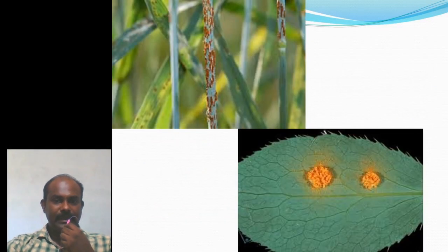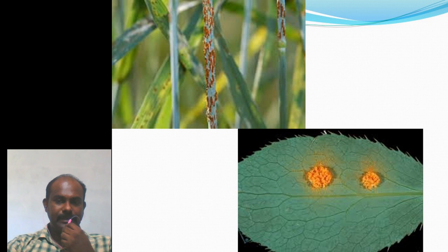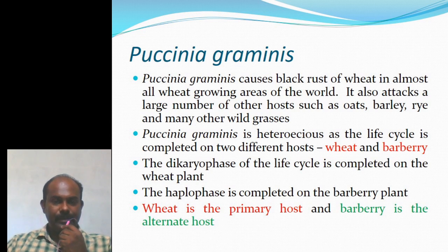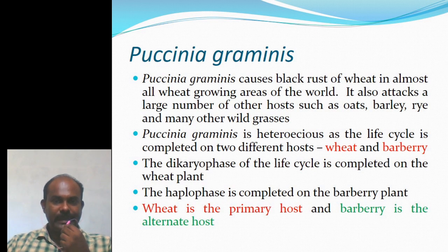These are the appearances of Puccinia — this is the stage on the Barberry leaf and this is the stage on Wheat. We are going to discuss about Puccinia graminis today. Puccinia graminis causes black rust of wheat in almost all wheat-growing areas of the world, and also attacks a large number of other hosts such as oats, barley, rye, and many other wild grasses. Puccinia graminis is heteroecious as the life cycle is completed on two different hosts, i.e., Wheat and Barberry.